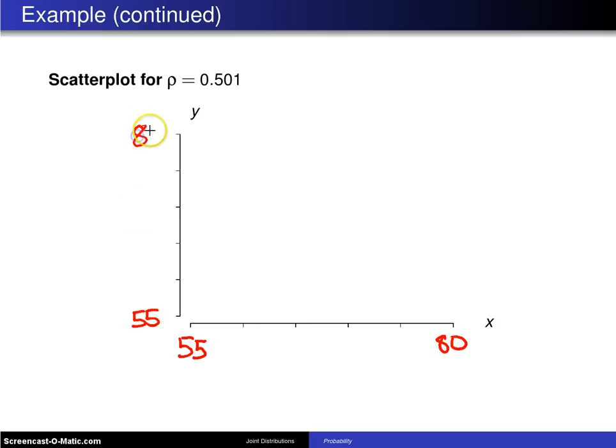And with a correlation of 0.501, you'll get 1078 values that are spread out in this type of fashion. You might get an occasional one over here.